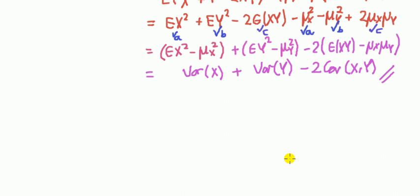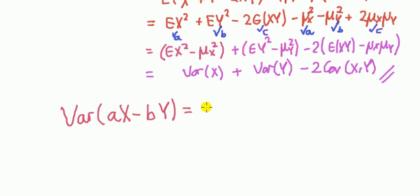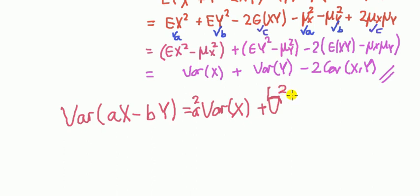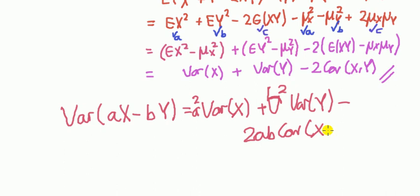So we're pretty much done. It helps to memorize these methods, but make sure you really understand this. I want you to go away and repeat this proof to get a more general result: show that the variance of a times x minus b times y, where a and b are constants, equals a squared times the variance of x plus b squared times the variance of y minus 2ab times the covariance of x and y. If you can do that on your own, you've understood it — the method is pretty much identical. Have a go and let me know how you get on.